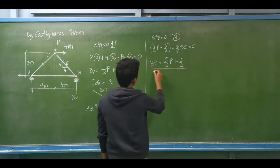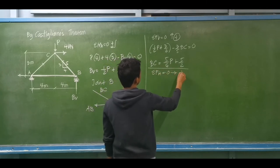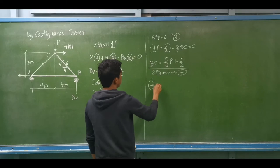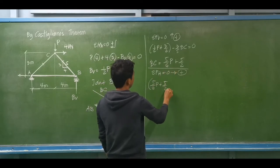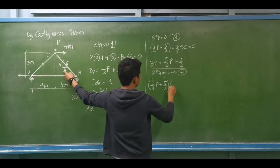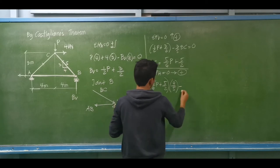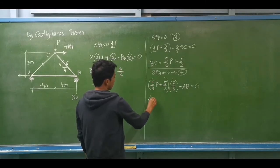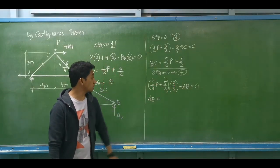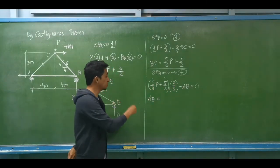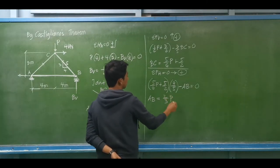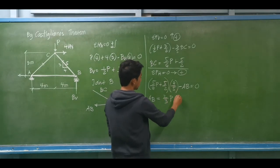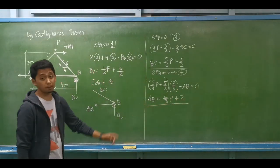For member AB: AB = (4/5) × [(5/6)P + 5/2] = (4/6)P + (4/5)×(5/2) = (2/3)P + 2. So the axial force for member AB in terms of P is (2/3)P + 2, assumed in tension. We may now proceed to joint C.